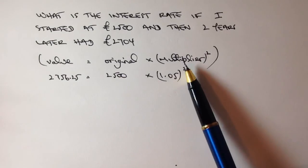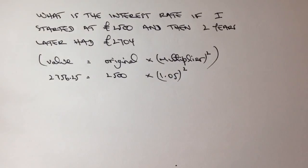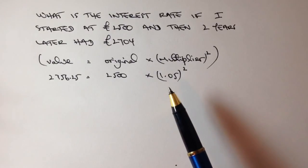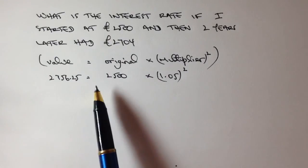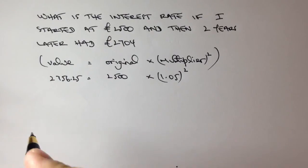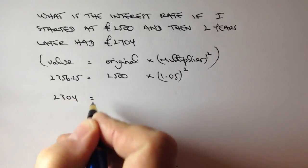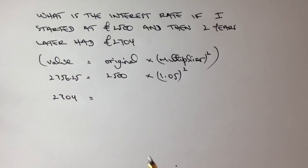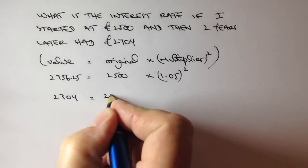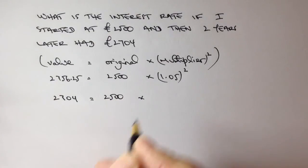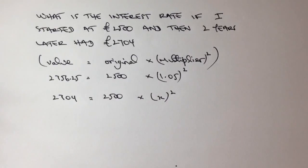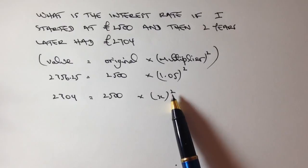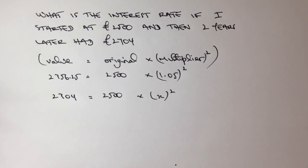The difficulty with the question is we don't know what the multiplier is, and instead what we're going to do is just use X. What we're going to say in terms of the question is that we have to make this equation balance. So what we're saying is 2,704 must equal the original value, which we know is 2,500. The multiplier we don't know, so I'm just going to call it X, and I'm going to say that's squared, because we know that it's two years. And then it's really just a case of using algebra to get our value of X.